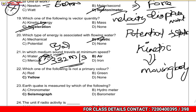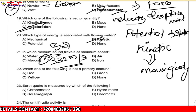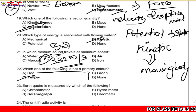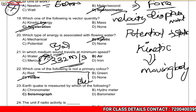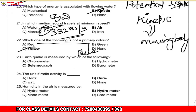Which of the following is not a primary color? The primary colors are red, green, and blue. Yellow is not a primary color — the answer is yellow.